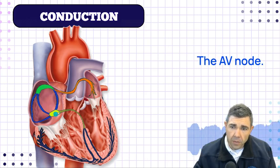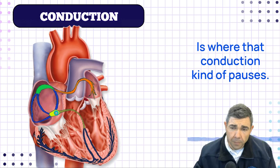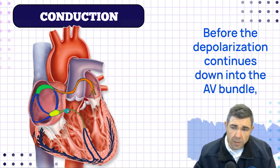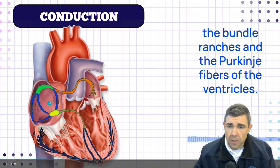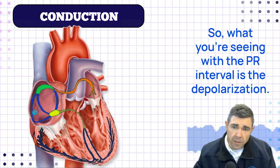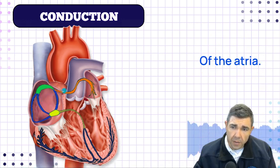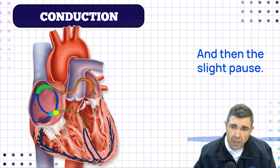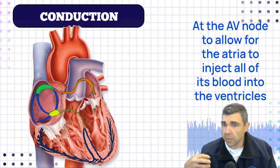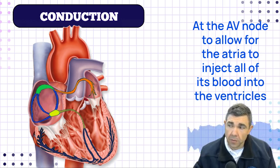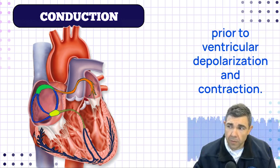The AV node is where that conduction pauses before depolarization continues down into the AV bundle, the bundle branches, and the Purkinje fibers of the ventricles. What you're seeing with the PR interval is the depolarization of the atria and then the slight pause at the AV node to allow the atria to eject all of its blood into the ventricles prior to ventricular depolarization and contraction.